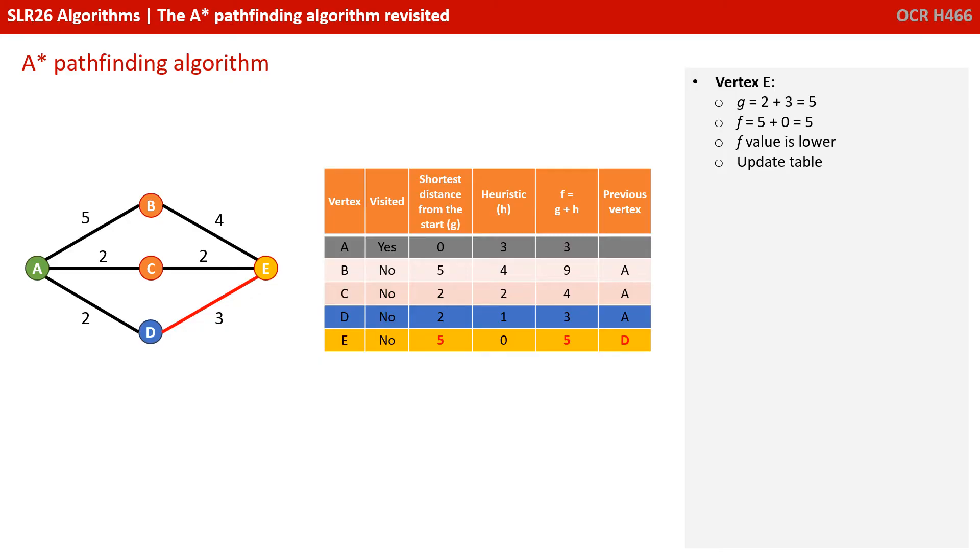Plus the heuristic of 0, so that gives us an F value of 5. That's lower than what's already stored, so we update the table. Vertex D has been visited, so we update the table to reflect this.